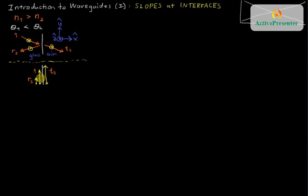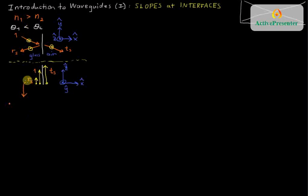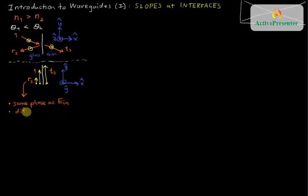It does not mean that the transmitted Poynting vector is larger than the incident Poynting vector — that would be an energy conservation problem. Just to clarify the coordinate system: the upward direction is Z-hat, the normal to the interface is X-hat, and Y-hat goes into the board. The important thing here is the reflection coefficient R_S. As we have solved, the reflected beam has the same phase as the incident beam; what's different is the amplitude.